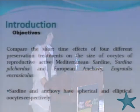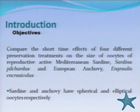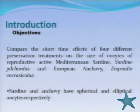Concerning all this background, our objectives were to compare the short-time effects of four different preservation treatments on the size of oocytes of reproductively active Mediterranean sardine and European anchovy. We chose these species because sardine and anchovy have spherical and elliptical oocytes respectively, so they allow us to check the effect of oocyte shape on preservation treatments.